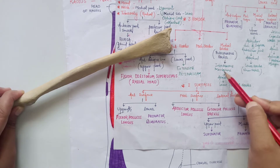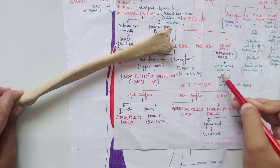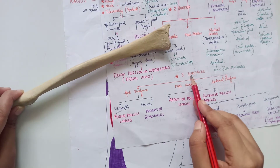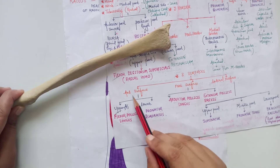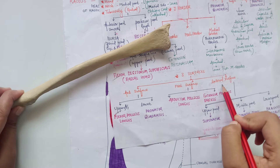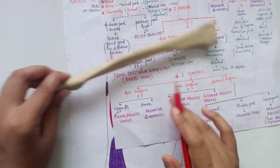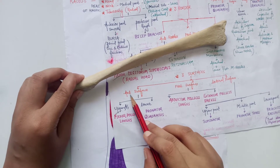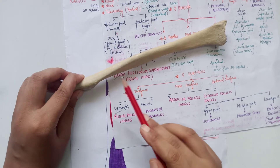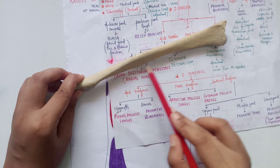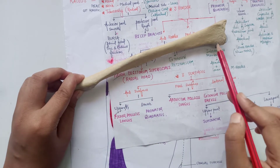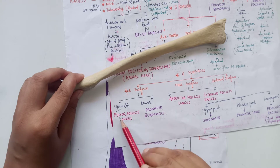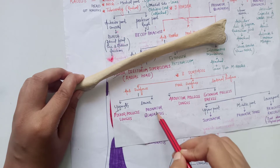The medial border is also known as the interosseous border. It has the interosseous membrane attached to it. The three surfaces are the anterior surface, posterior surface, and lateral surface. The anterior surface is formed between the anterior border and the medial border.